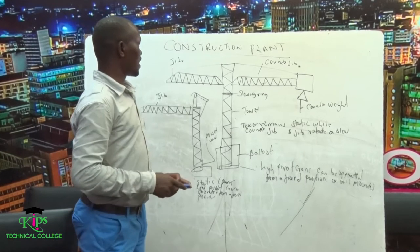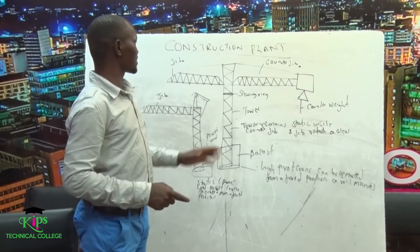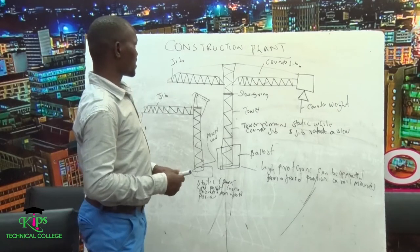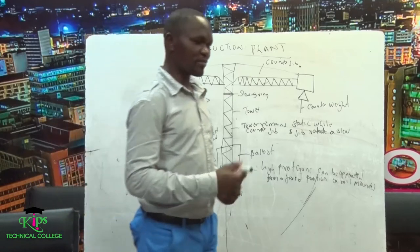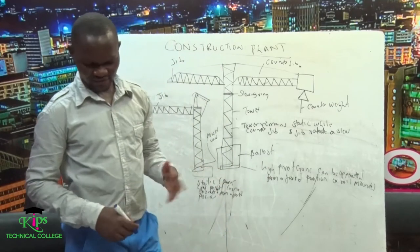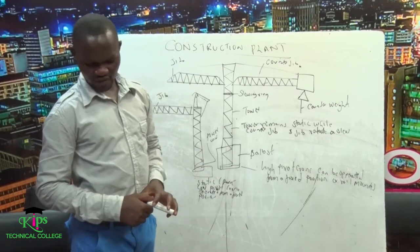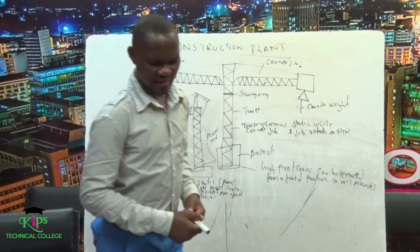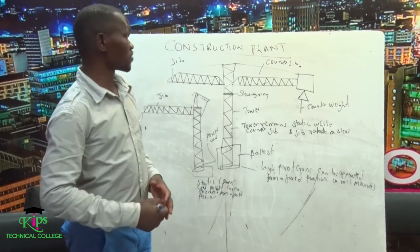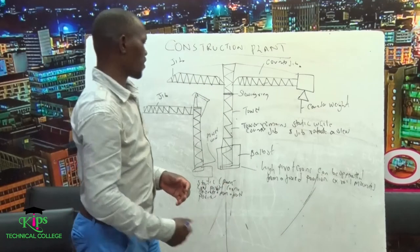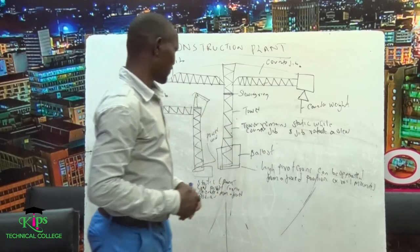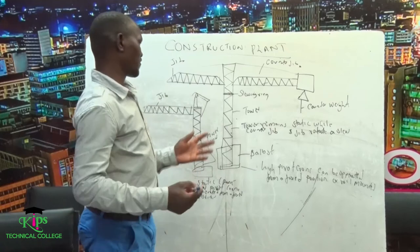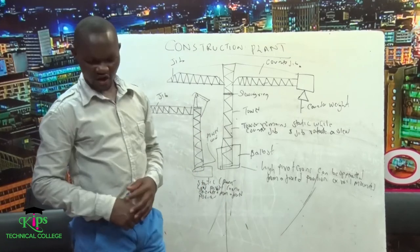Good evening. I'm happy to welcome you to today's class on the construction plant. We started discussing about transporting plant, where we discussed various types and recalled cranes as a transporting plant. Cranes are mainly used to transport materials from lower ground to higher ground — for example, from the ground floor up to the third floor, depending on the nature of the building.